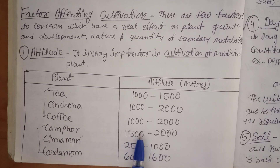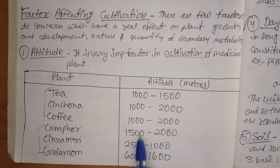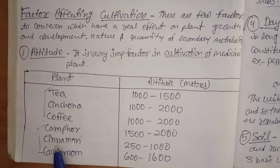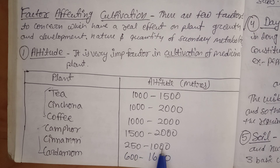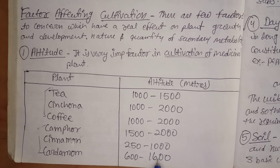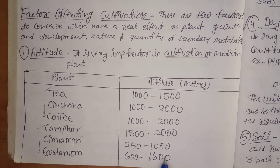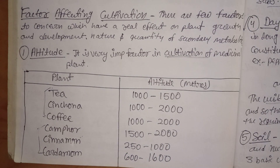Camphor grows at 1500 to 2000 meters — the last maximum of the previous two drugs becomes the new minimum. For cinnamon, the altitude is 250 to 1000 meters, and for cardamom it is 600 to 1600 meters. You can remember cardamom as six-double-zero to 1600 — 600 to 1600. You should include these examples when writing the answer to make it impressive.